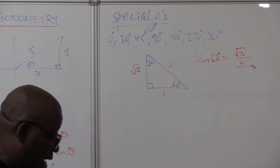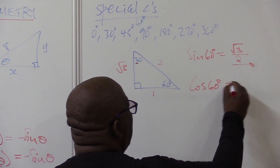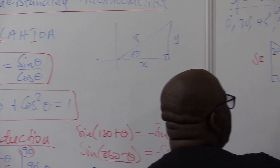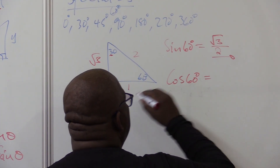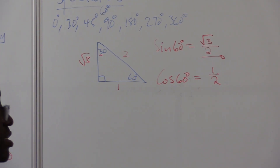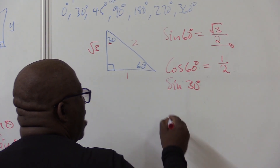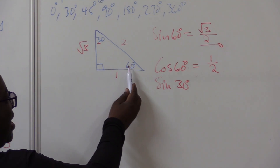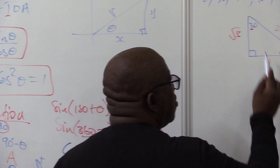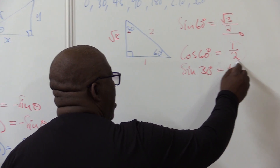When the question says do not use a calculator, you think of special angles. For cos 60 degrees, cosine is adjacent over hypotenuse, so it will be 1 over 2. For sine 30 degrees, sine is opposite over hypotenuse. With 30 here, opposite over hypotenuse is 1 over 2. Notice that sine 30 and cos 60 give the same answer.